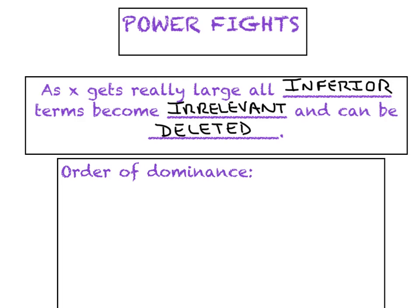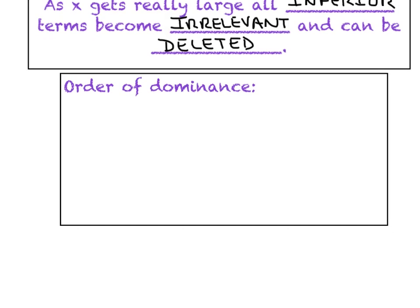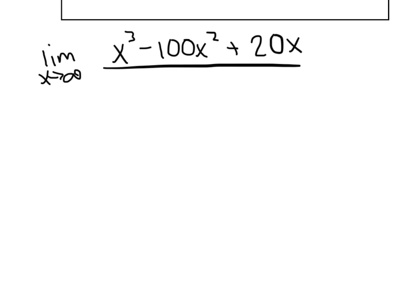Let's consider this example right here. The limit as x approaches infinity. Let's say x cubed minus 100x squared plus 20x is all divided by 50x squared plus 8x. What do I mean by inferior points? Well, there becomes a point. Early on, when x equals 1, 2, 10, 100, you know, all those guys, this term is fairly relevant. The 20x is fairly relevant.